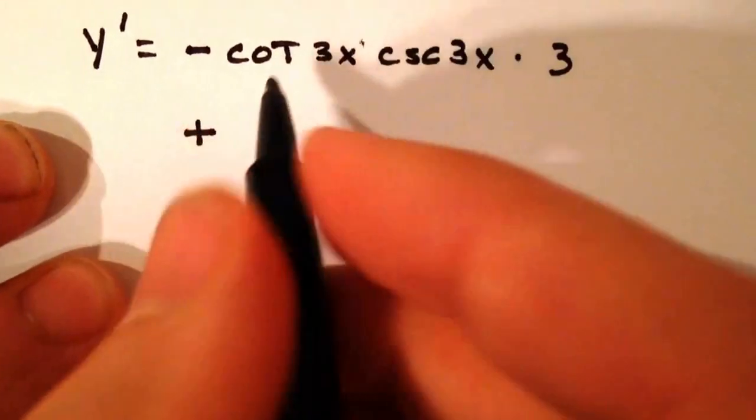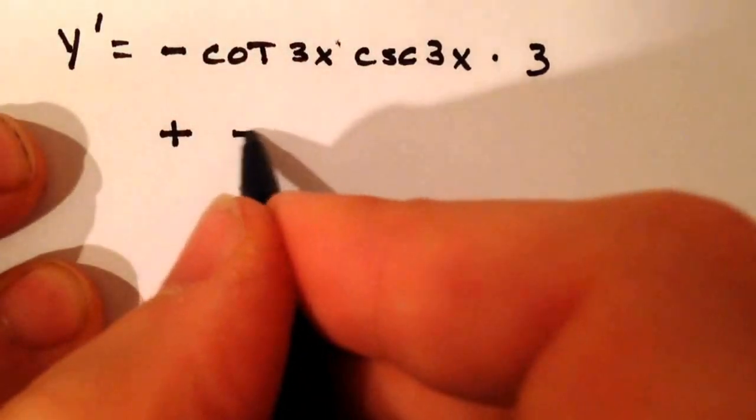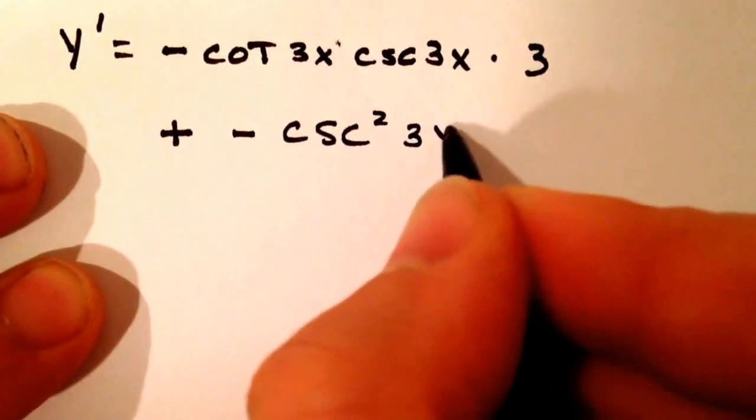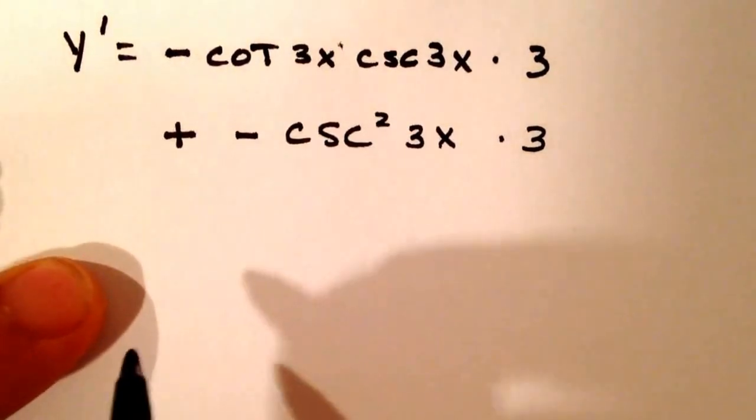Plus the derivative of cotangent is negative cosecant squared of 3x times 3. That's right.